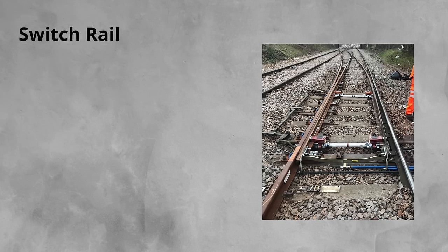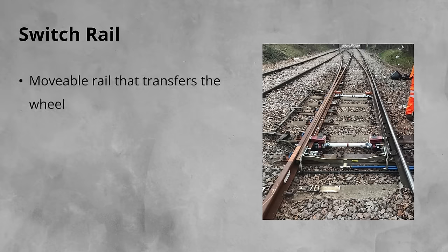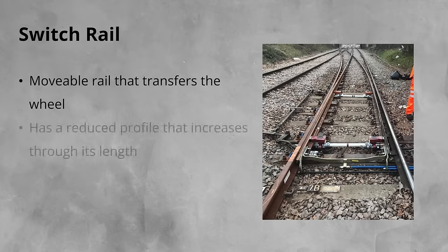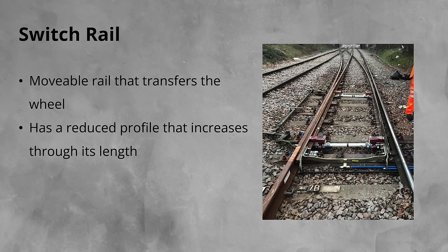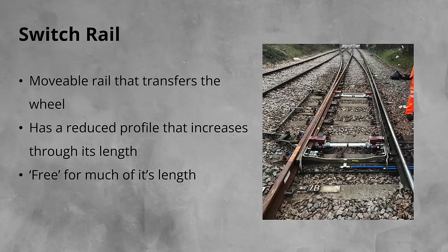Next up, the switch rail. The switch rail is the part of the half set that moves. It is on the switch rail that the wheel transfers between the two rails. To allow this to happen, the switch rail has a reduced profile at the start that gradually increases through its length until it reaches a full rail section. The inspection and maintenance of the switch rail profile is a critical maintenance activity to avoid trains derailing. For much of its length, the switch rail is free. It is not clipped down like normal rails and the stock rail.